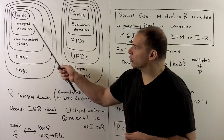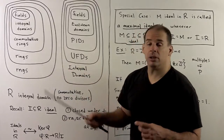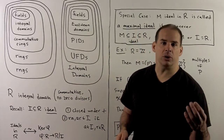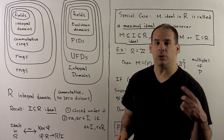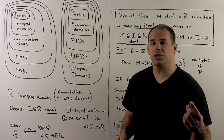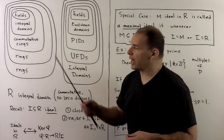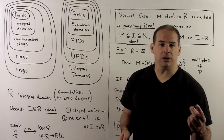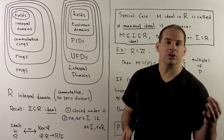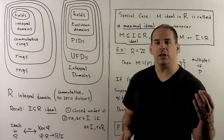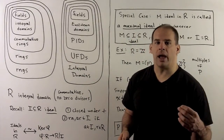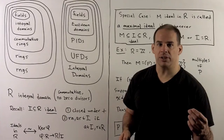Then we have integral domains — these are commutative rings with no zero divisors. One more step in, we have fields. In a field, all non-zero elements are units.